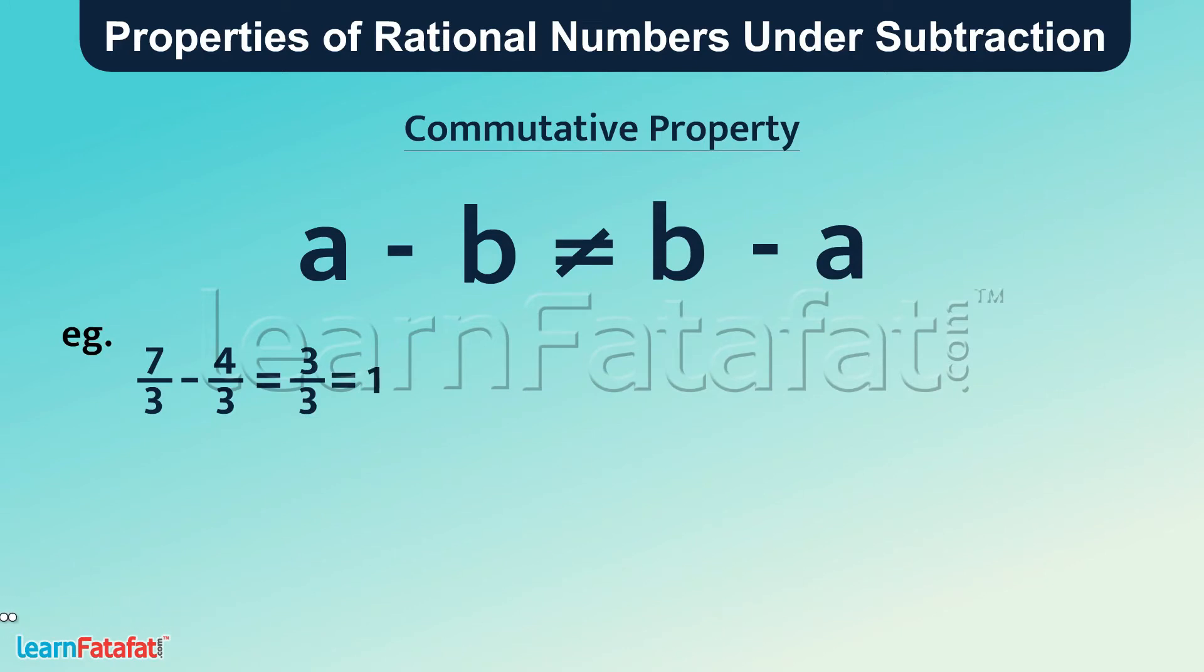...which is equal to 1. But after changing the order, that is 4 by 3 minus 7 by 3, gives minus 3 by 3, which is equal to minus 1. As a result, 1 and minus 1 are not the same.